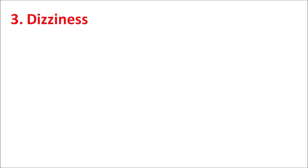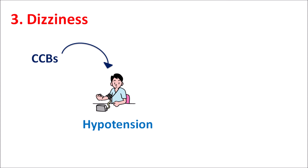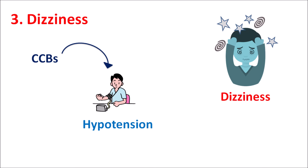Third: dizziness. All CCBs can produce hypotension. The reduction in blood pressure may reduce blood flow to the central nervous system, resulting in dizziness, lightheadedness, and even fainting. Central side effects like dizziness and lightheadedness are commonly observed with all CCBs that produce hypotension.